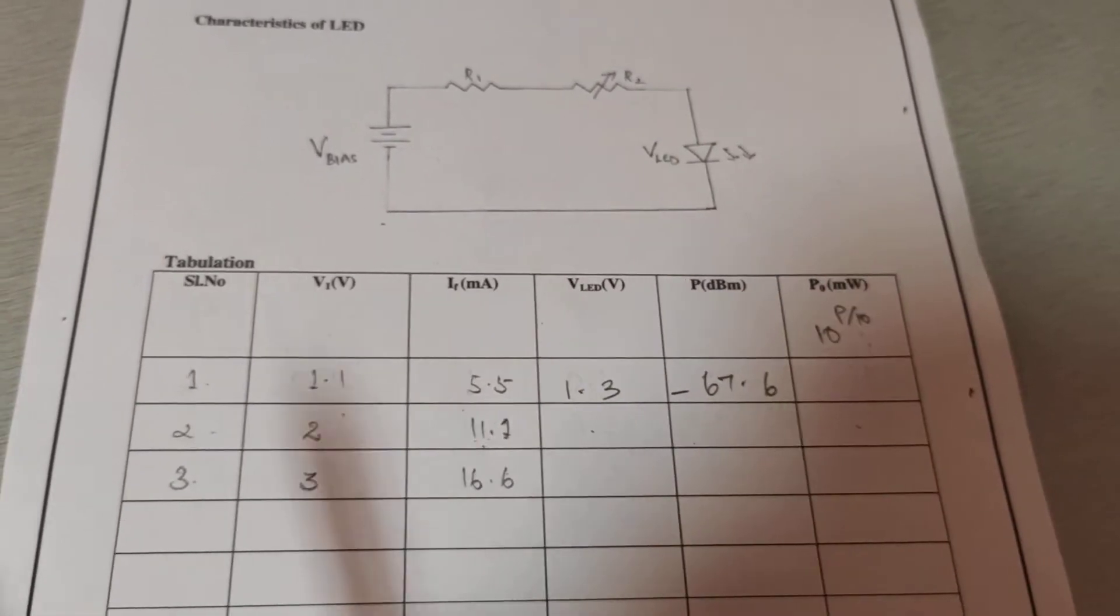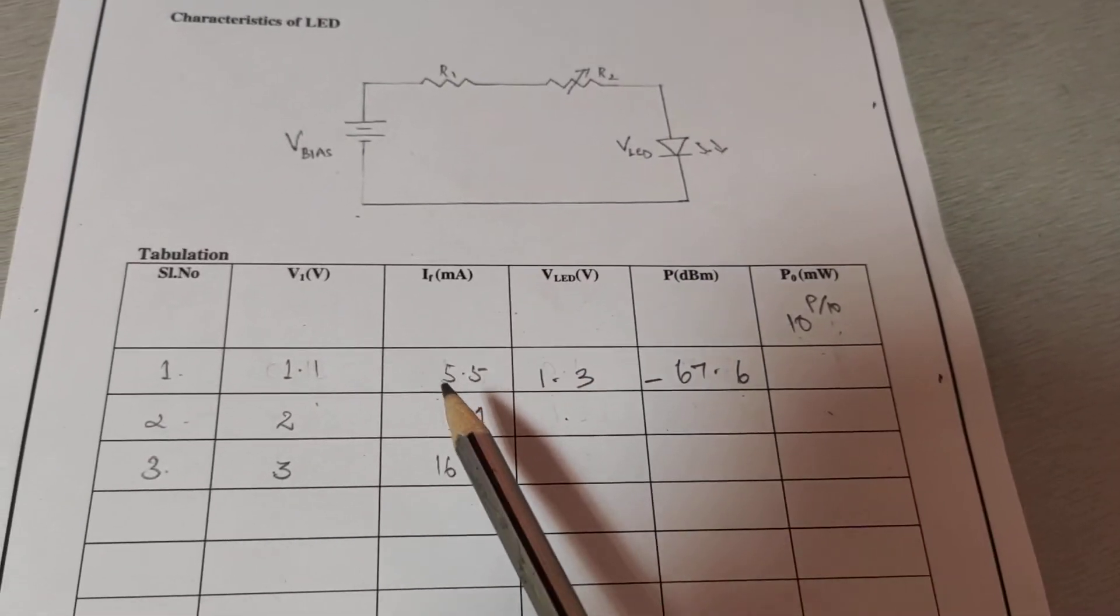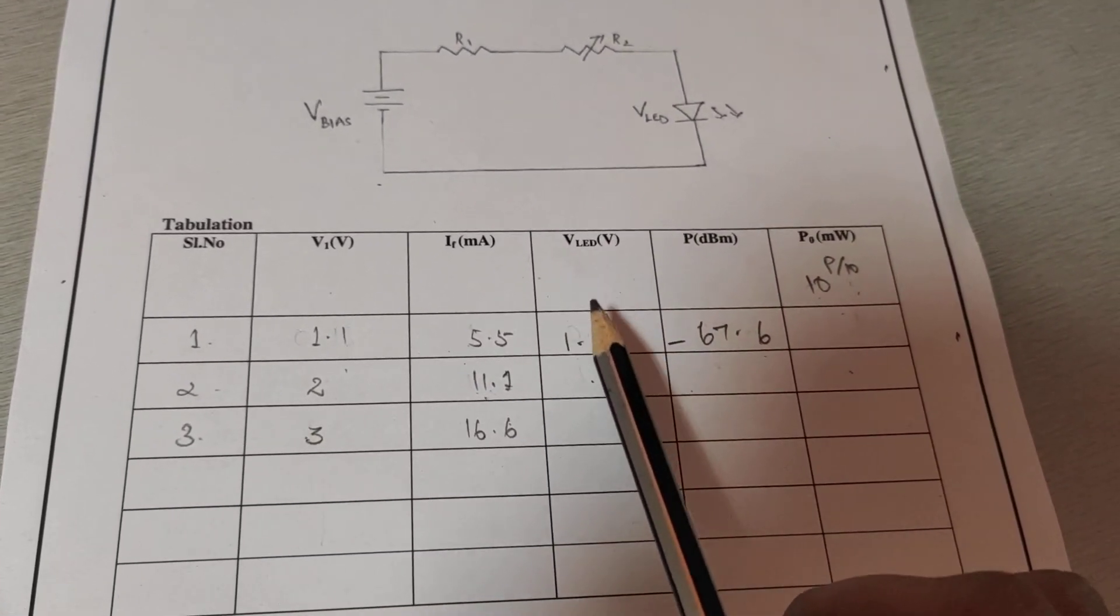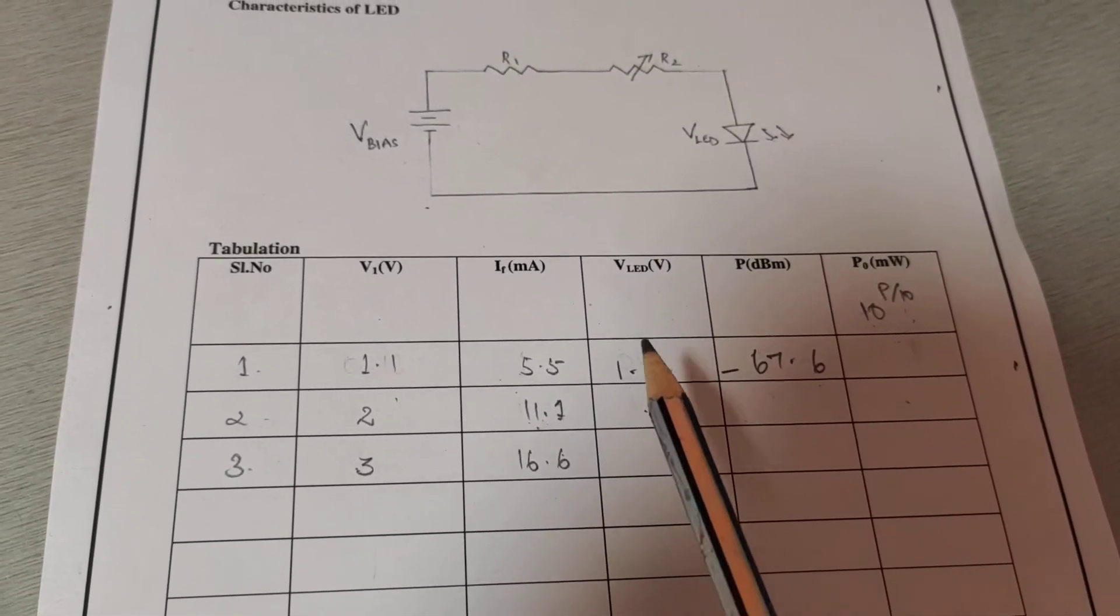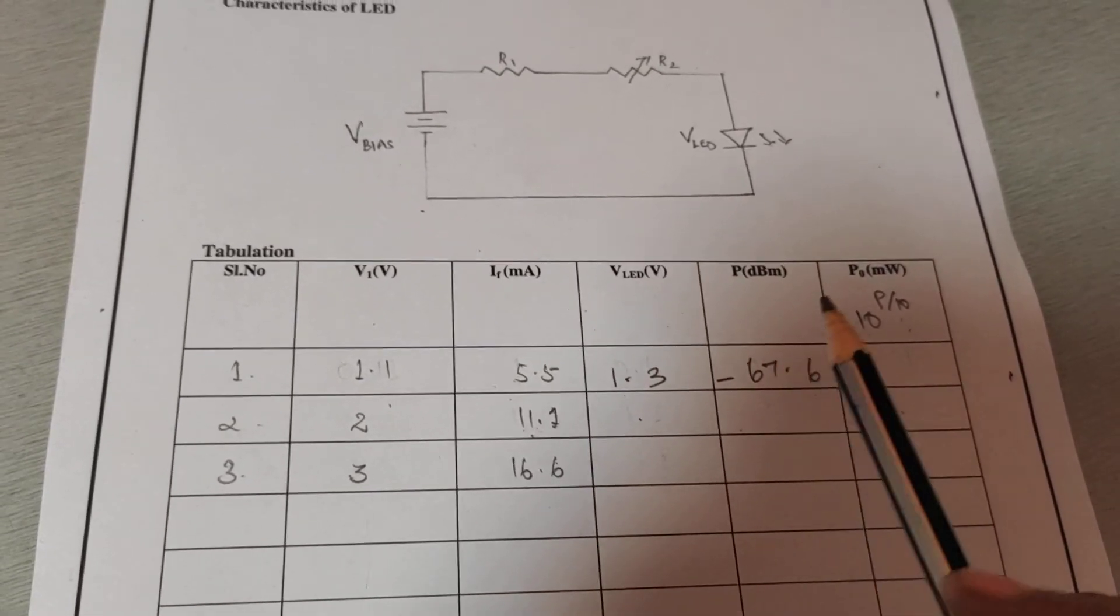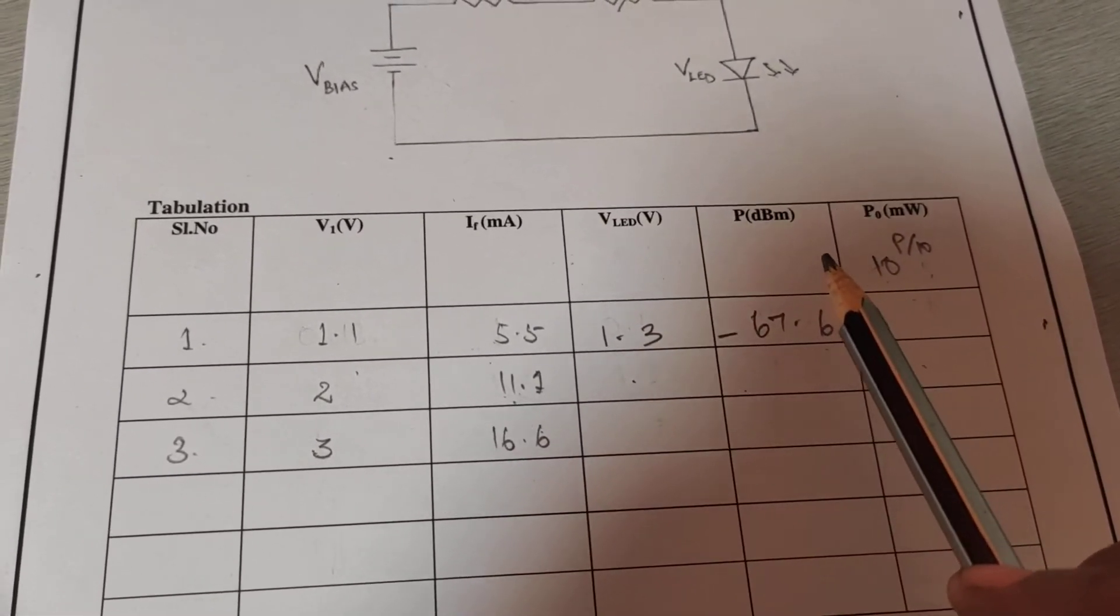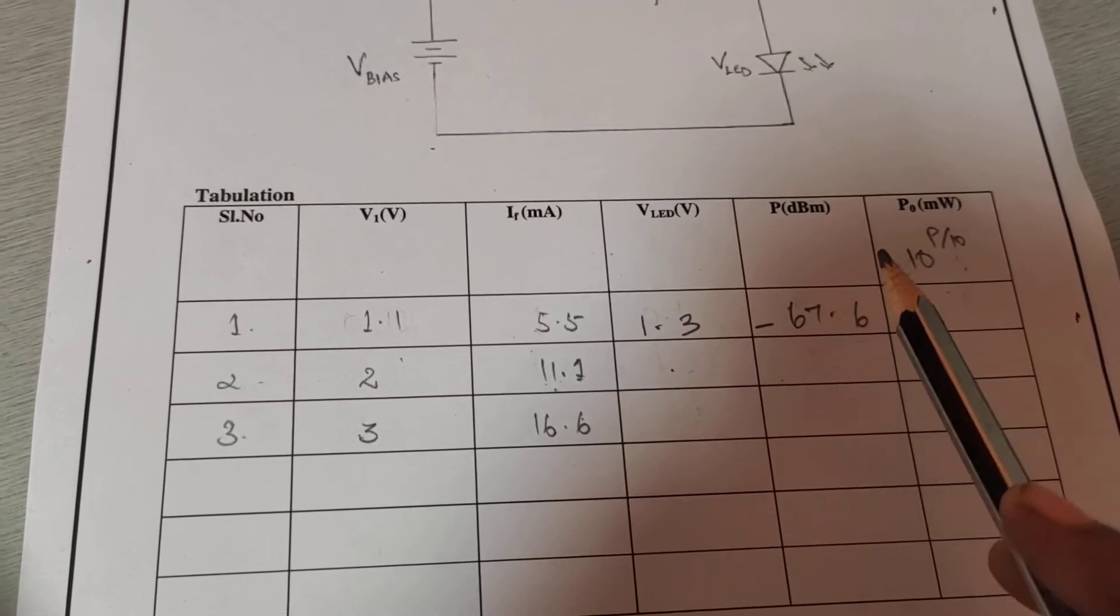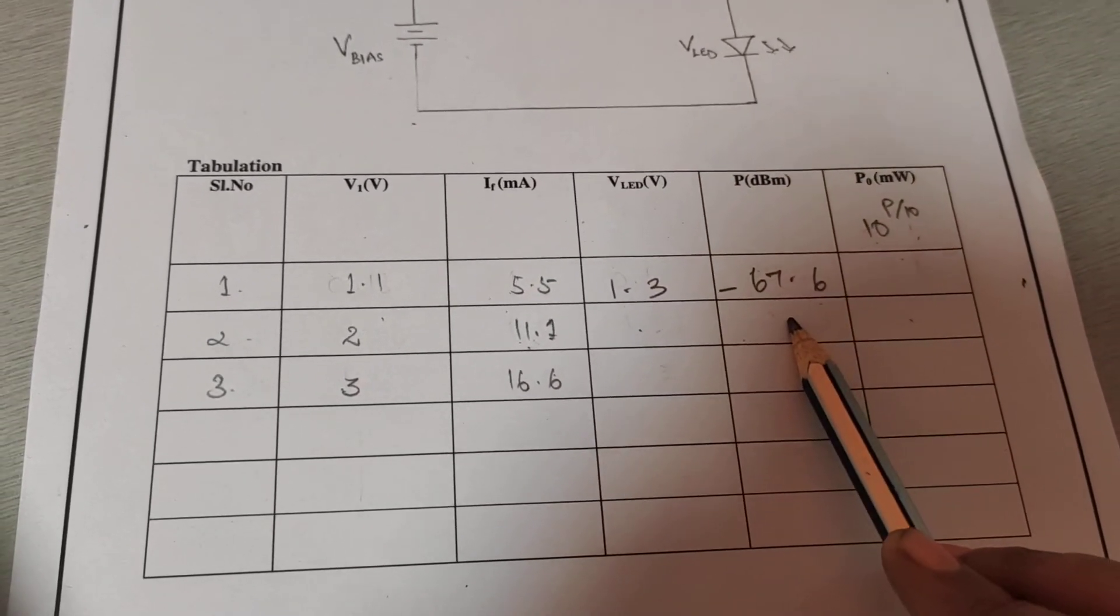Then from this, we measure VLED. Across the LED, we measure the voltage VLED. And then we measure the output optical power with the help of the optical power meter.